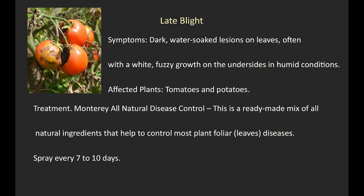4. Late blight. Symptoms: dark, water-soaked lesions on leaves, often with a white fuzzy growth on the undersides in humid conditions. Affected plants: tomatoes and potatoes. Treatment: Monterey All-Natural Disease Control. This is a ready mix of all-natural ingredients that help to control most plant foliar leaf diseases. Spray every 7 to 10 days.